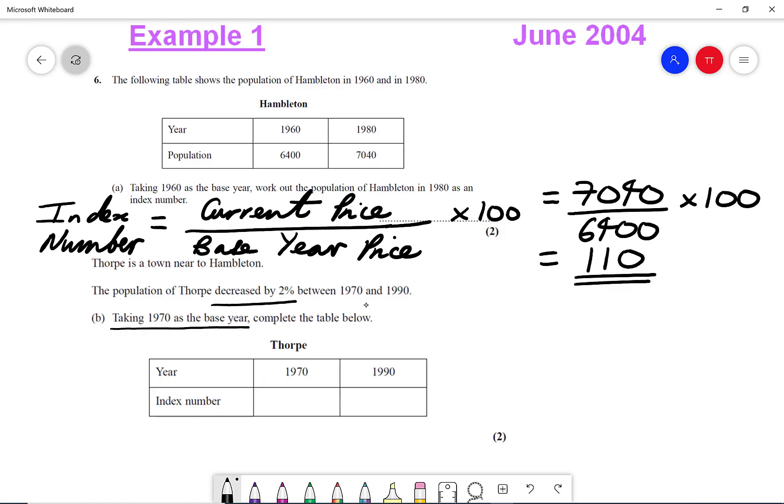So we would say that the original would be 100, so we could write 100 here. And it's decreased by 2%, so 100 take away 2 is 98.